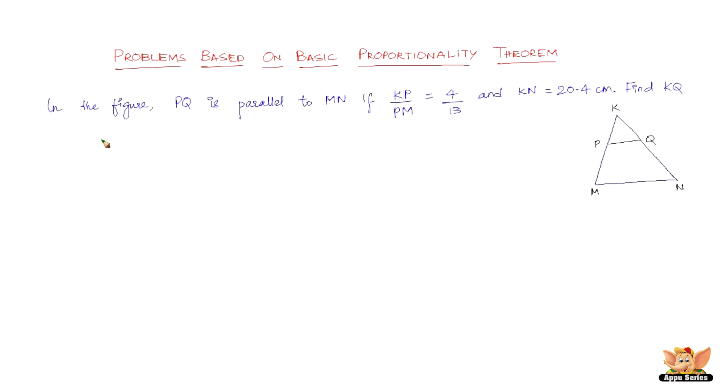Here we've got a problem which reads like this. In the figure, PQ is parallel to MN. If KP/PM = 4/13 and KN = 20.4 cm, find KQ.